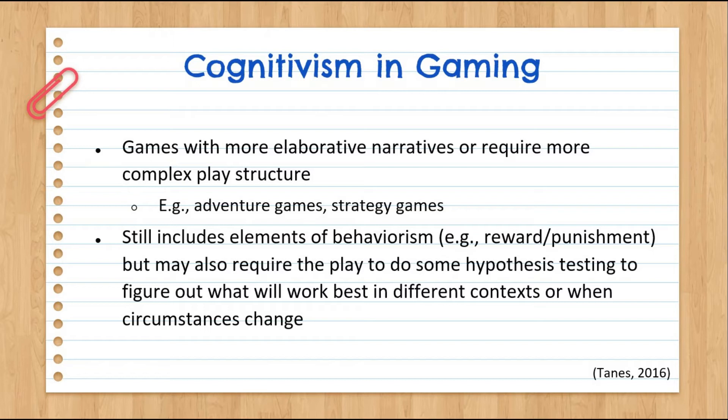In these games, players have to consider a combination of observed consequences from their own actions, as well as processing situational factors and testing out different strategies — like considering the map, the nature of their enemies, and available resources. This chapter also talks more about gaming in relation to information processing theory and Bandura's social cognitive theory, so I recommend checking it out if you're interested.